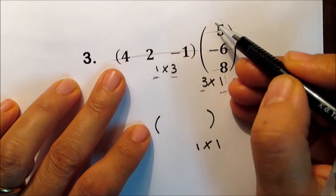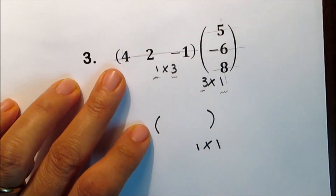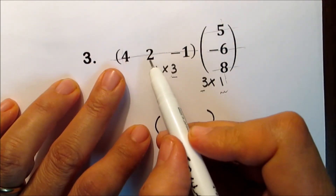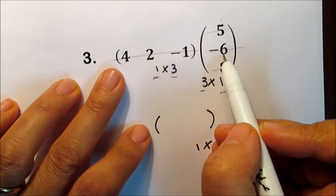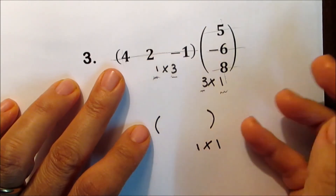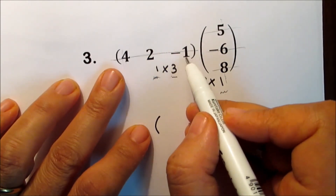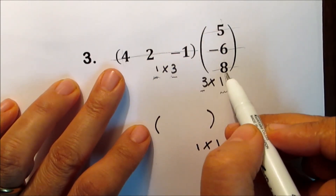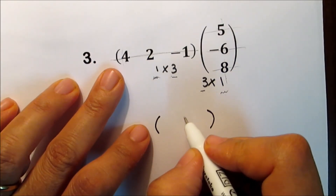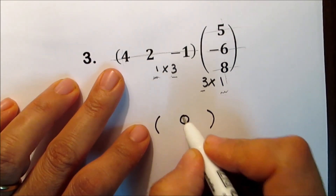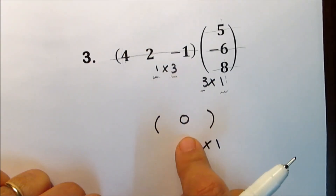Four times five is twenty, plus two times negative six is negative twelve, plus negative one times eight is negative eight. Add all of these together and you get zero. The result has only one row and only one column.